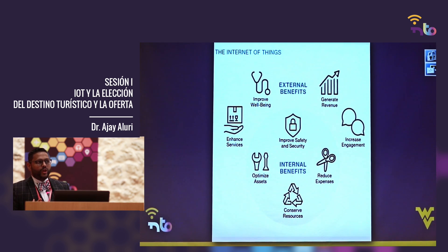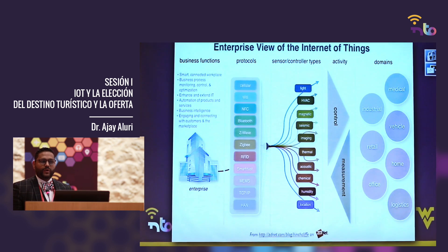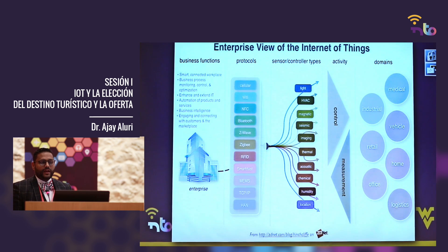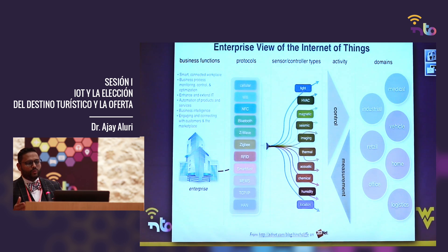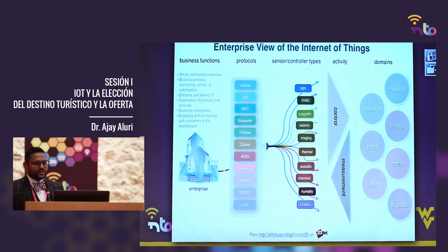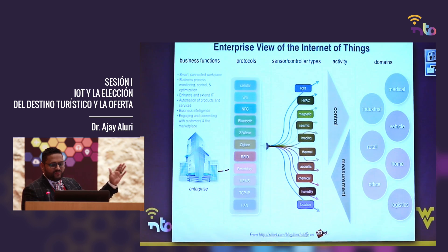There are also internal benefits. IoT will help you with costs if used appropriately, improve safety and security, optimize assets, and conserve resources. So there are external and internal benefits when you use it appropriately. You don't want to use IoT just because you want to — you want to use IoT if you really have a particular need, and understand your business function, the protocol you want to use, the sensor and controller types, and what activity you want to control in different domains.